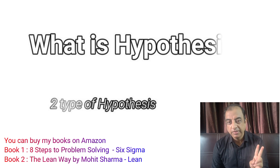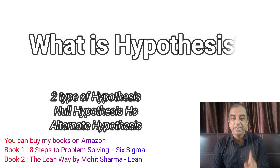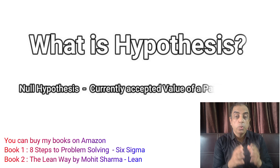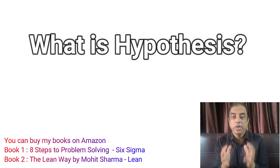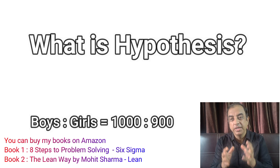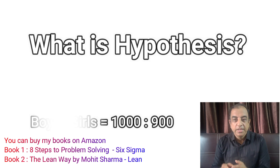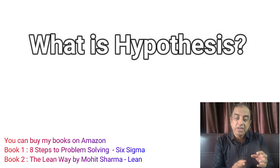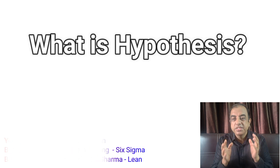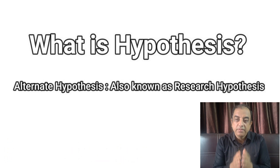There are two types of hypothesis: one is called null hypothesis and the other is called alternate hypothesis. The null hypothesis is the currently accepted value of a parameter — for example, the boys-to-girls ratio in India is 1000 to 900. That already established fact is called H0 or null hypothesis. Then somebody wants to challenge it and comes up with an alternate theory, known as the alternate hypothesis, also called the research hypothesis.